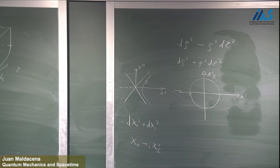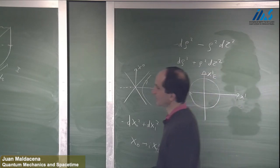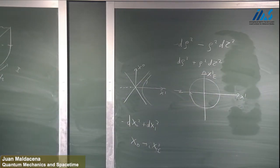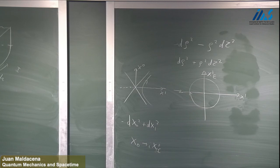The same story works for the black hole. For the black hole case, the state produced is the Hartle-Hawking state — the standard vacuum state for the black hole in thermal equilibrium. This represents a black hole in thermal equilibrium with the gas of particles outside, with the thermal atmosphere outside.